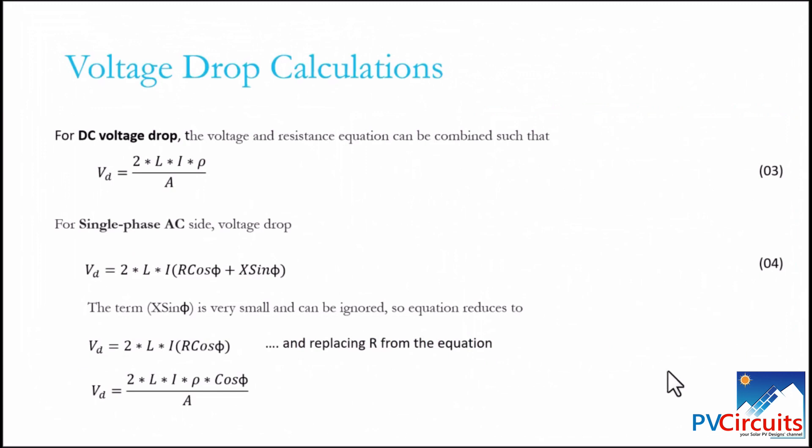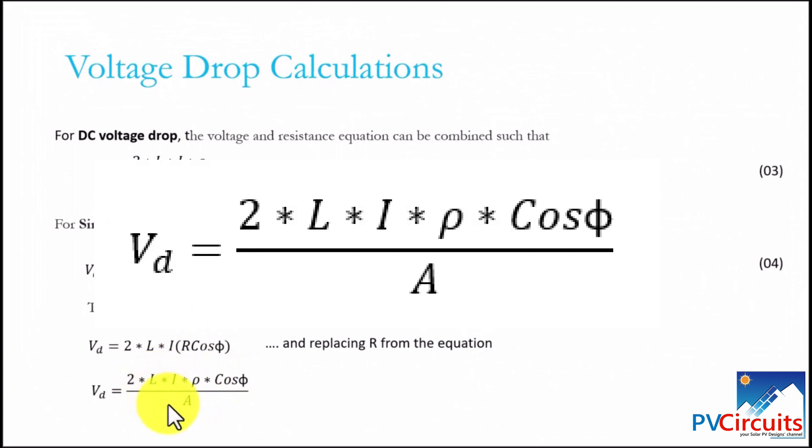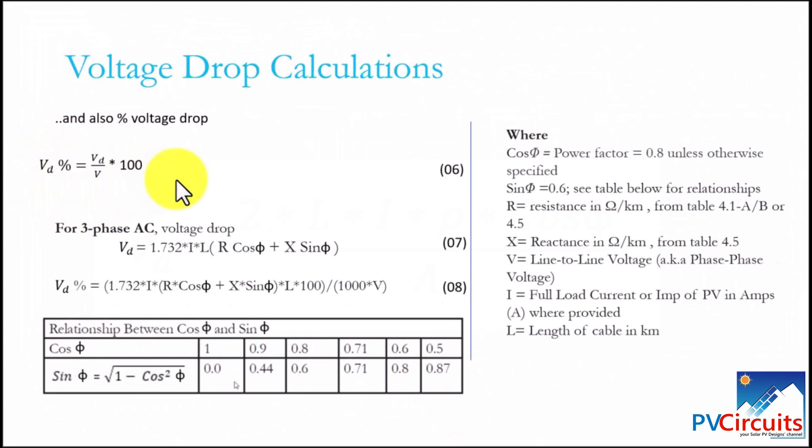Moving back to our equation, we are told that this part of the equation is very small and can be ignored. We find that this equation can be reduced as voltage drop being equal to 2 times length times current times resistance times power factor. And further, by replacing R, we end up with equation 05 and therefore percentage voltage drop can be defined as expressed in equation 06.